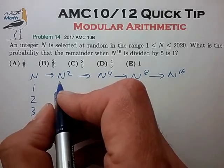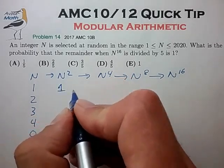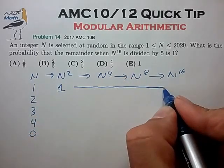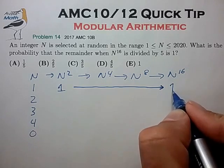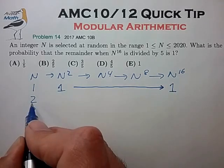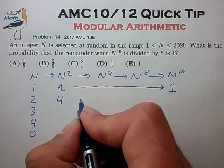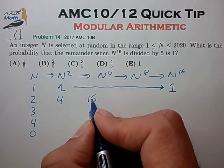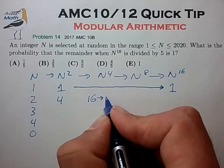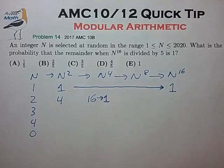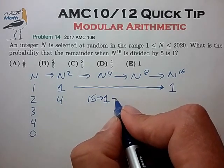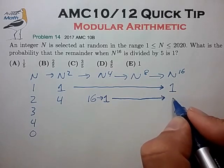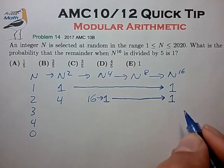For n equals 1, n squared is equal to 1. And all repeated squares will also leave us with 1. For n equals 2, n squared is equal to 4. n to the 4th is equal to 16. But we know that 16 is really just 1 in mod 5. And if we take repeated square operations after that, we're left again with just 1.